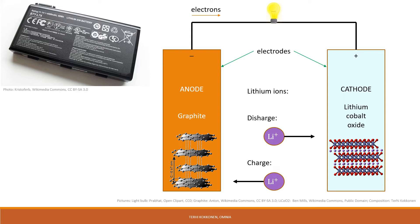The electrolyte provides the pathway for the transfer of positively charged ions to balance the negative flow. In most cases, laptop batteries are lithium-ion batteries. In the lithium-ion battery, the spontaneous flow of lithium ions from the graphite anode to the lithium cobalt oxide cathode causes a corresponding flow of electrons in the external circuit. Upon recharging, cobalt is oxidized, forcing the lithium to migrate back to the graphite.